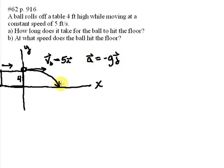And another thing is the initial position, s-naught, is equal to 4. So these are the things we need to keep in mind.